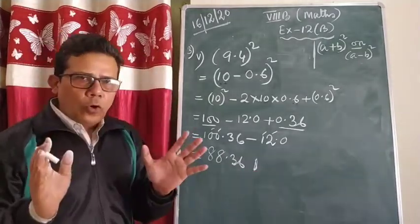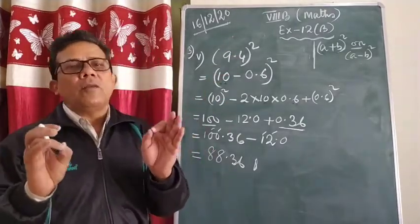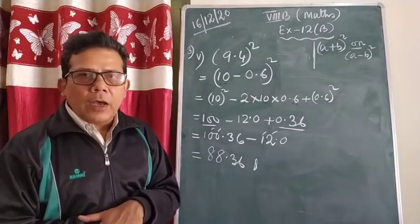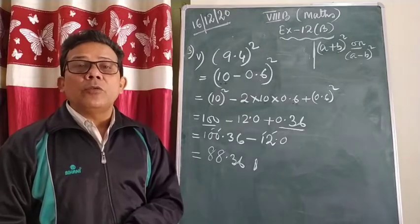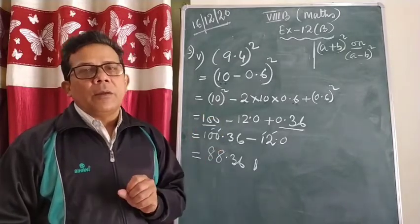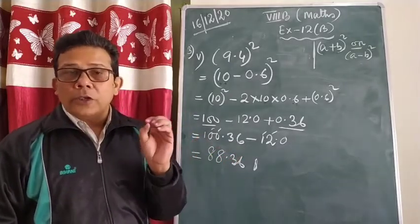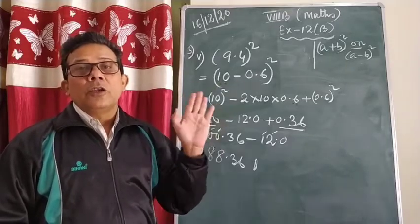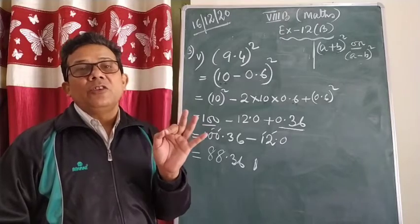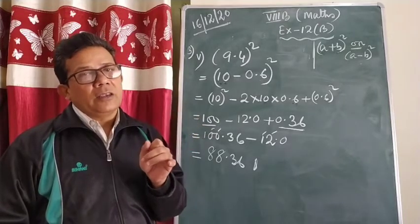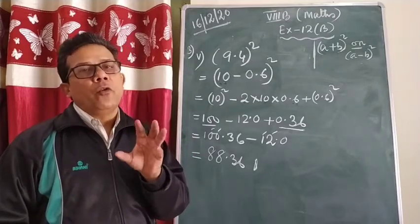Just remember what you have to do: whatever number is given, try your best to convert it into the form of (a+b)² or (a-b)². Whenever you convert it into that form, definitely one number will be bigger and one will be smaller — whether you are doing addition or subtraction. Always try to take the bigger number such that its unit place comes to zero, so that your calculation will be easy for multiplication and other things.